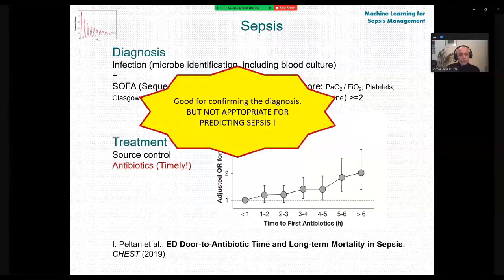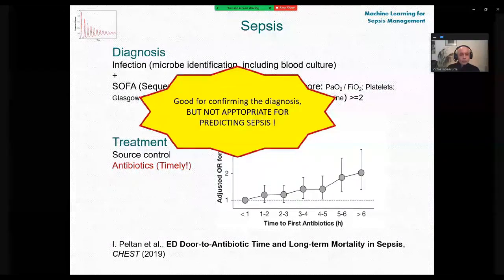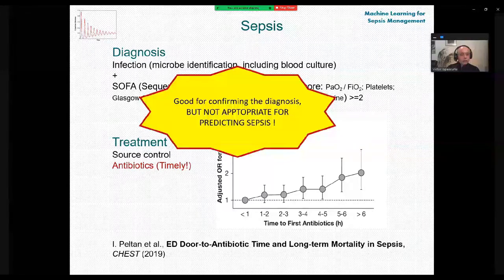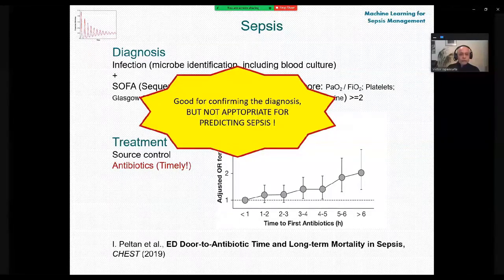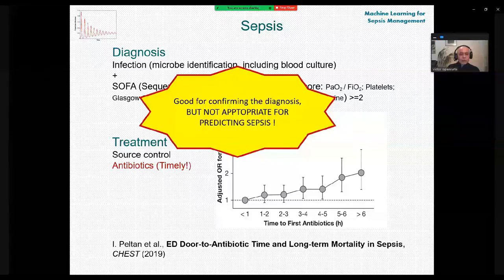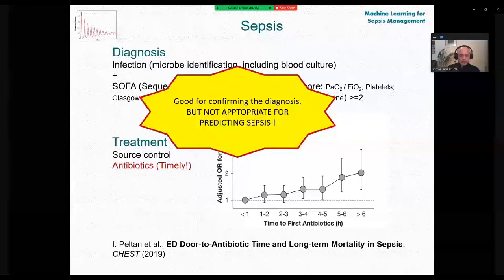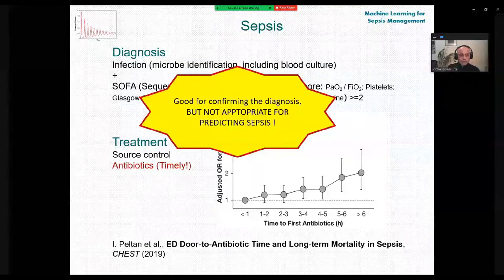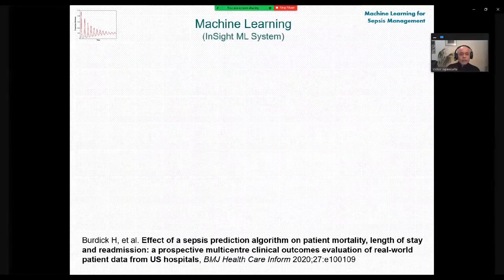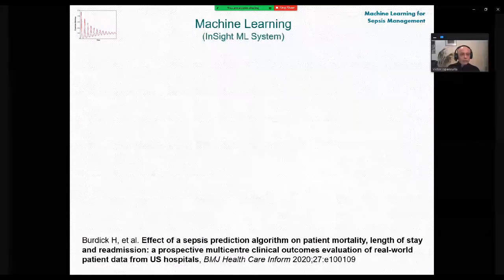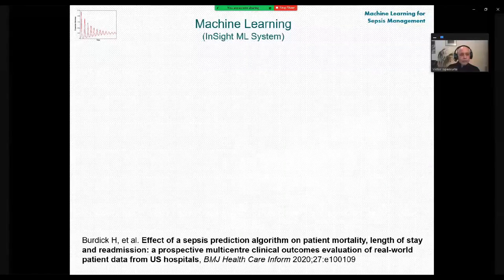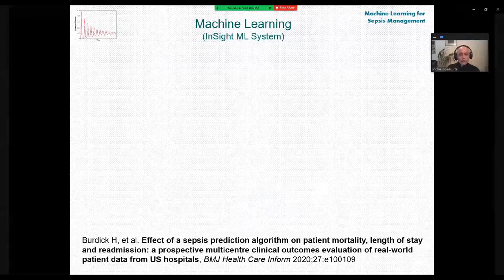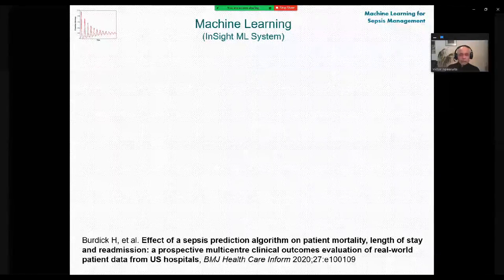Available tools are good for confirming the diagnosis but are far from appropriate for predicting sepsis, and this research is designed to cover that gap. Machine learning is being used recently to address this problem. I will describe one state-of-the-art system described in the literature: the InSight system. Details are available in the article at the bottom of the screen.